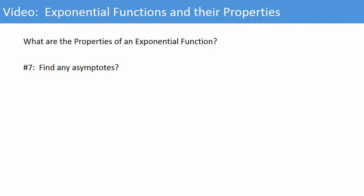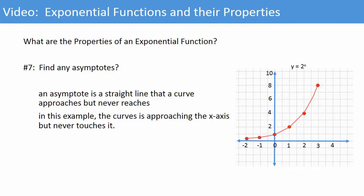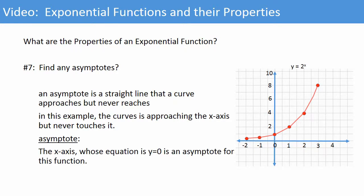Finding the asymptotes. What is an asymptote? An asymptote is a straight line that a curve approaches but never reaches. In this example, the curve is approaching the x axis but it will never touch the x axis. So we say that the asymptote is the x axis. The equation is y equal to 0.